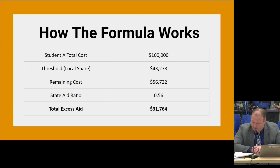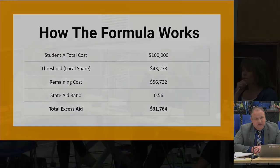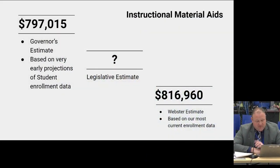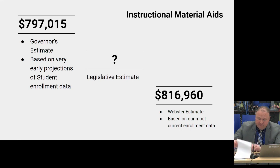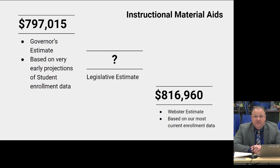Question: Do students have to stay an entire year? Answer: No — it is prorated. Last up is instructional materials aid. Not a lot of changes there — we're going to be slightly above the governor's rate based on our enrollment. These include textbook aid, software aid, and library book aid.